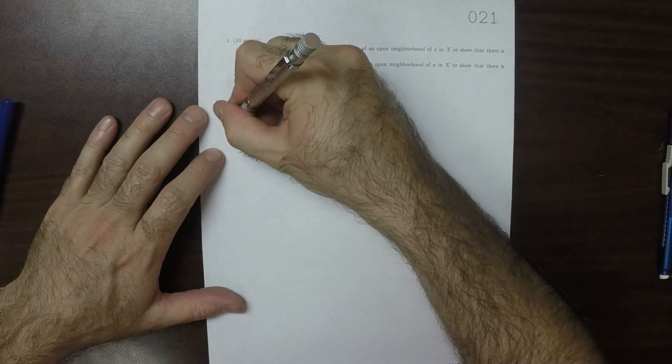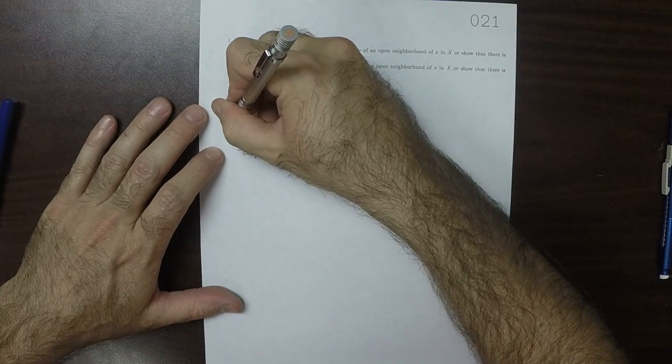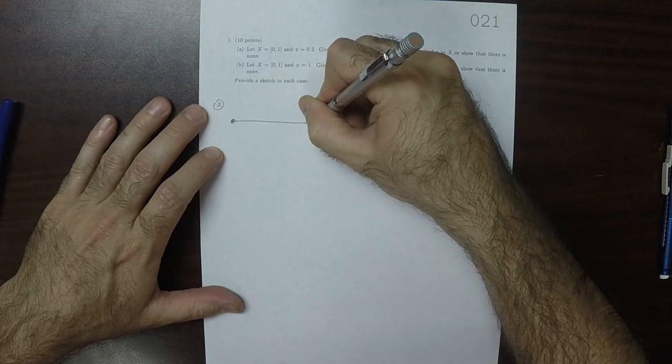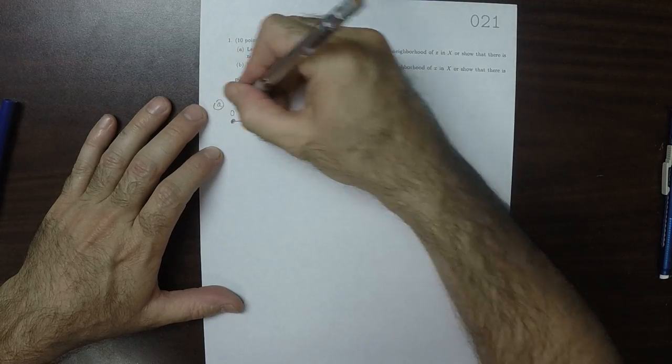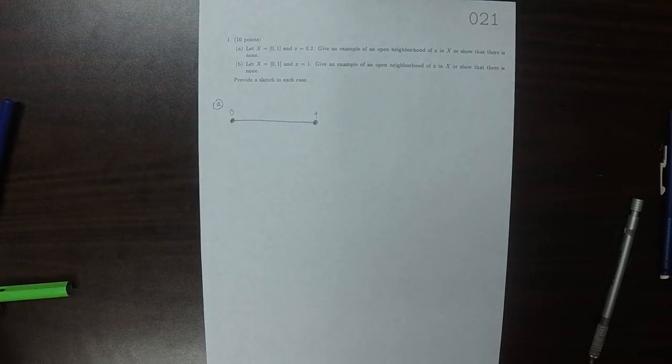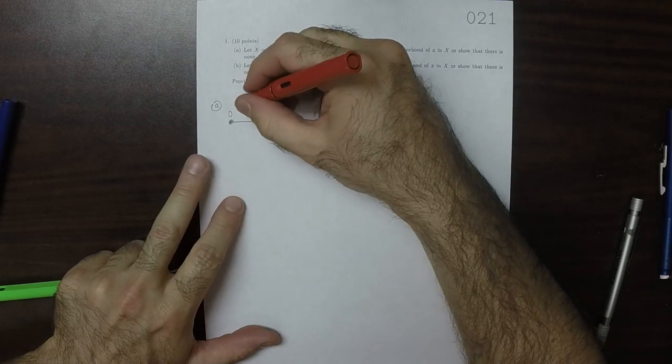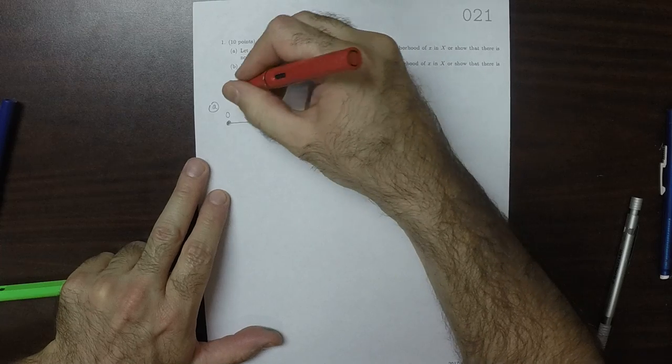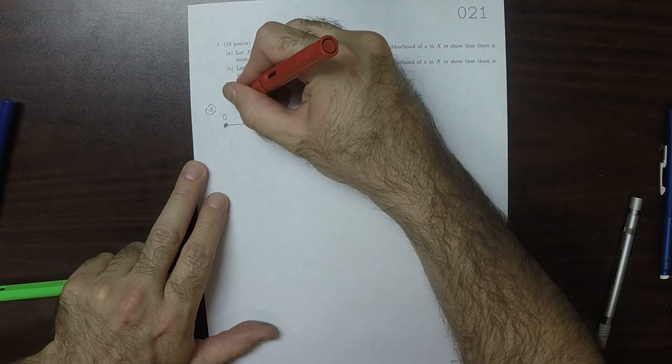We're given the closed and bounded interval 0 to 1, so 0 to 1. We're given the specific point x is 0.2.